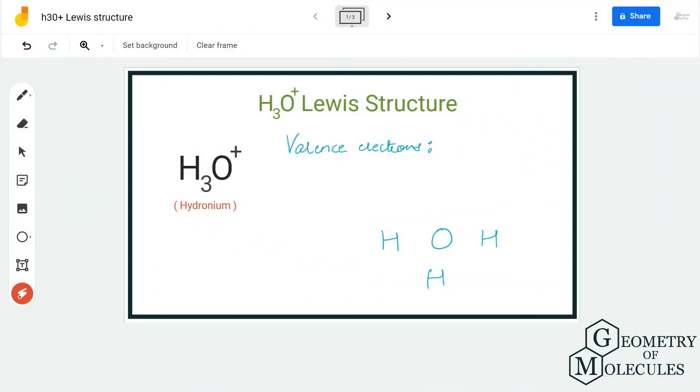Hi guys, welcome back to our channel. In today's video we are going to look at the Lewis structure for H3O+ ion. It is the chemical name of hydronium ion. As it has a plus charge, it means it is giving away one electron. It is very important to notice all these things when you are coming up with the Lewis structure of molecules or ions.